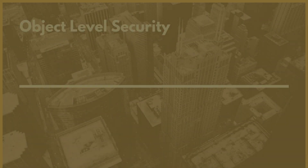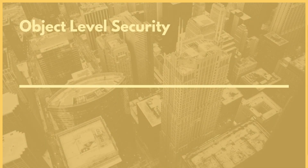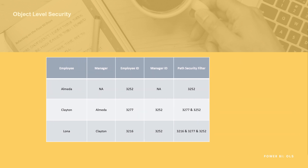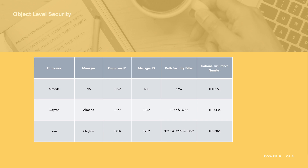Now we're going to look at object level security. Object level security works entirely differently to row level security. Instead of hiding a row of data we can hide an entire object — an entire table of data or an individual column. In this example we're going to take the table we had before and hide the national insurance number column, which is a very sensitive piece of information we don't want shared with managers or anyone else within the organization.